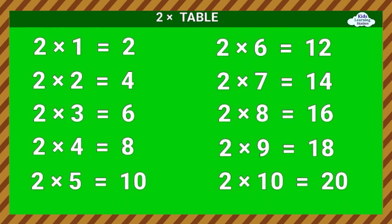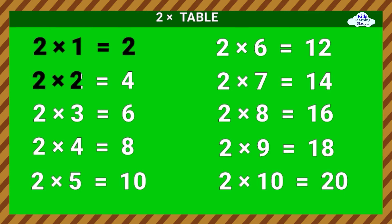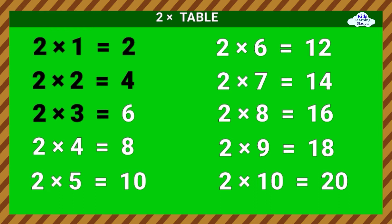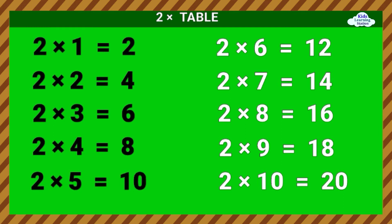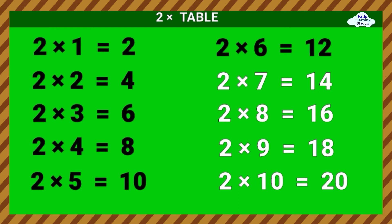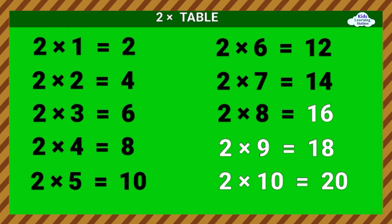Two times table. 2 times 1 equals 2. 2 times 2 equals 4. 2 times 3 equals 6. 2 times 4 equals 8. 2 times 5 equals 10. 2 times 6 equals 12. 2 times 7 equals 14. 2 times 8 equals 16.